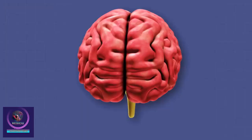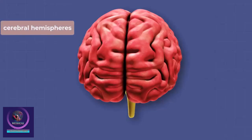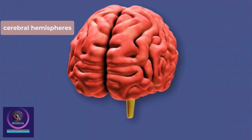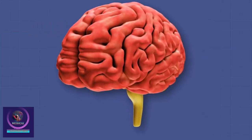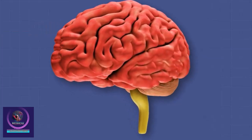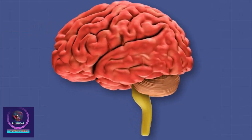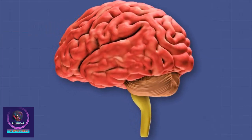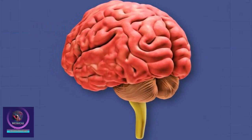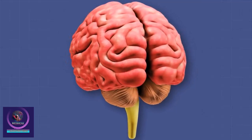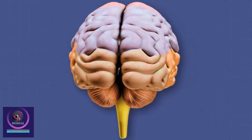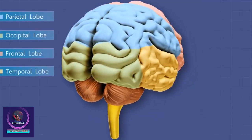The brain can be divided into two halves, known as cerebral hemispheres. Each hemisphere is divided into smaller areas by the grooves or folds you can see here. What's incredible about the brain is that each area is responsible for different functions.